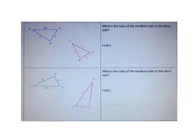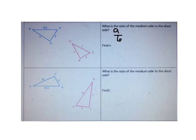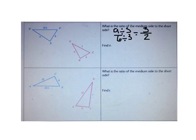Let's do another example. What's the ratio of the medium side to the short side? I can see that the medium side I know is 9 and the short side is 6. I can simplify to write that quotient in simplest form. The largest number that goes into both 9 and 6 is 3. When I simplify 9 over 6 by dividing both by 3, I get 3 over 2.